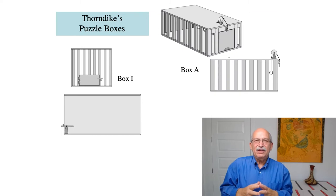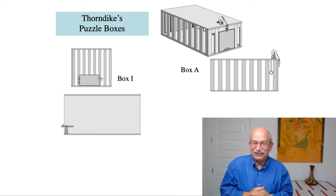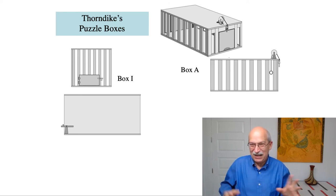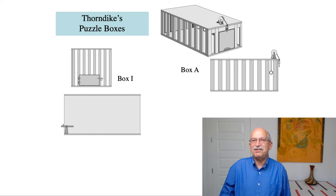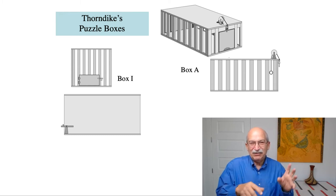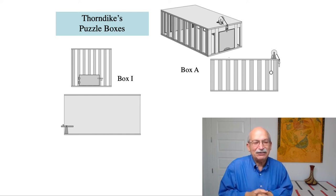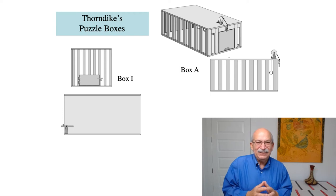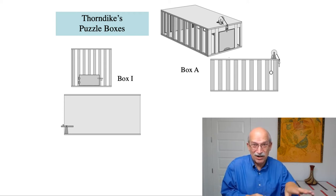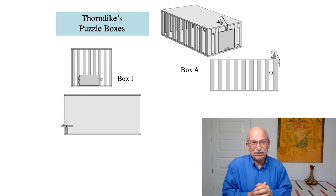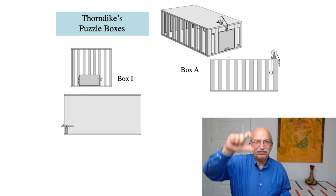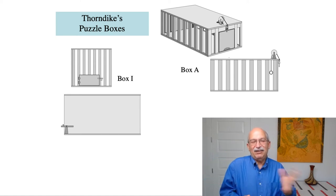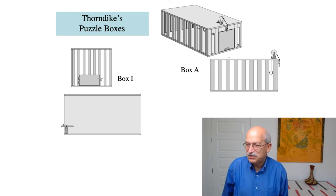In order to study intelligent behavior, Thorndike created a series of puzzle boxes — boxes that animals were placed in and had to make a response to get out. In many of these experiments, young cats served as experimental subjects. When the kitten was put into the box, it had to figure out how to operate a latch to get out. In Box I, for example, it had to press what looks like a lever — remarkably similar to a Skinnerian lever press. In Box A, the kitten had to pull a loop, which lifted a pin and allowed the door to fall open, and the kitten got out and got a piece of fish.